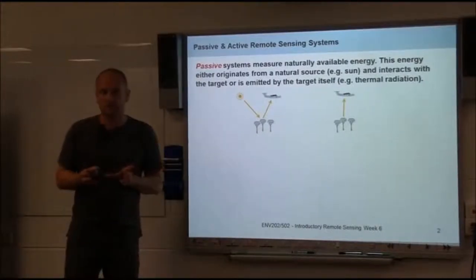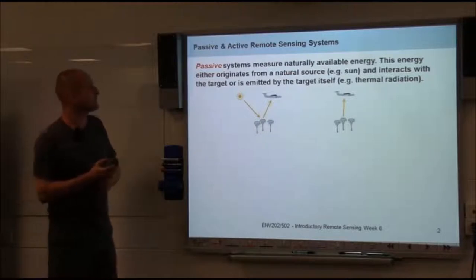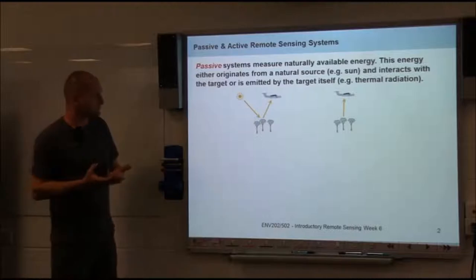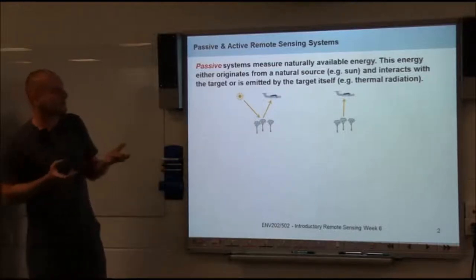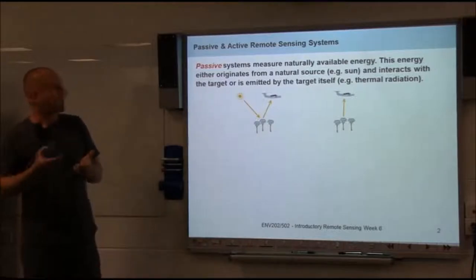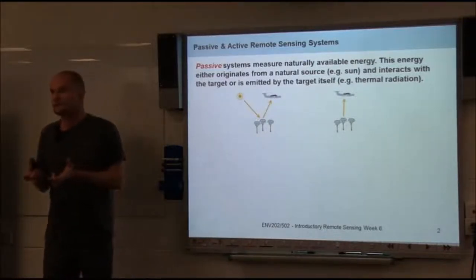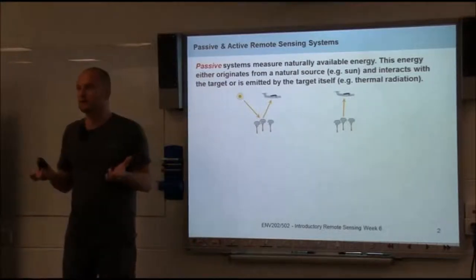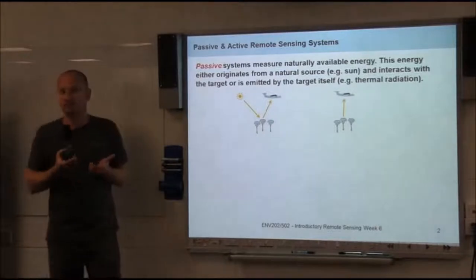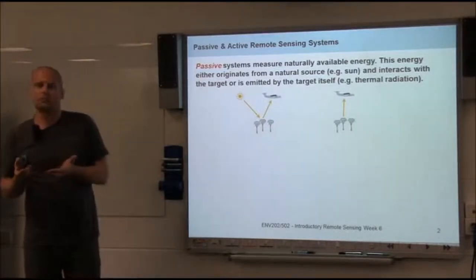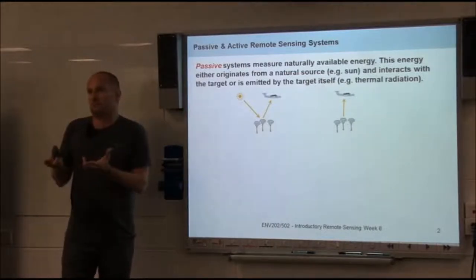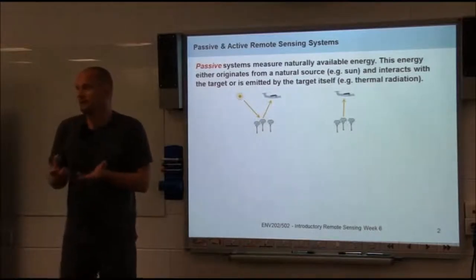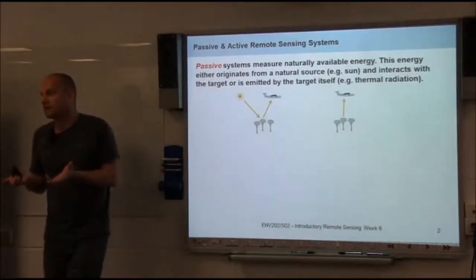Passive systems measure naturally occurring or naturally available energy. This energy can be from the sun or the moon, and then this light interacts with the target. Another option is the actual energy is emitted by the target itself. Just imagine a fire—that fire emits visible radiation but also thermal radiation. Actually every body above absolute zero emits thermal radiation, and that can be measured.